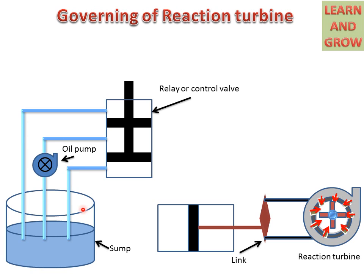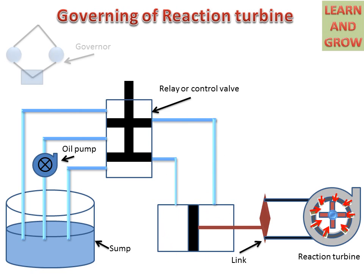The oil sump is connected to the relay and control valve through pipes — there are three pipes: an upper pipe, a middle pipe, and a lower pipe. From the other side, it is connected to the main cylinder. A governor is used for governing the supply and is connected to the relay and control valve with the help of a lever, and there is a fulcrum.